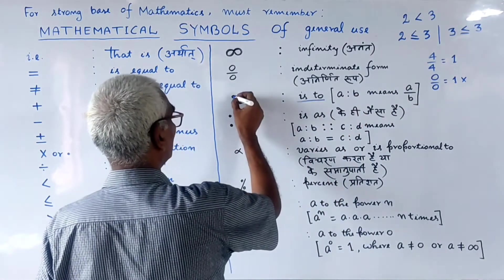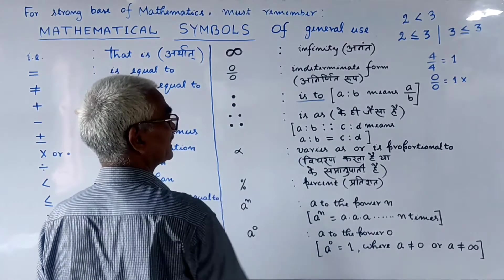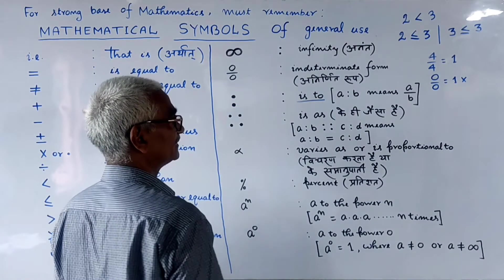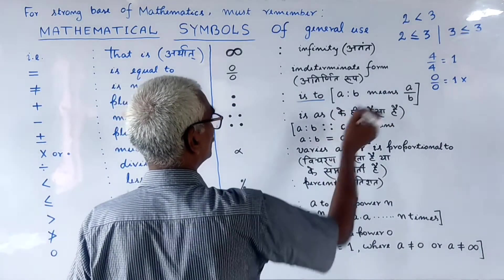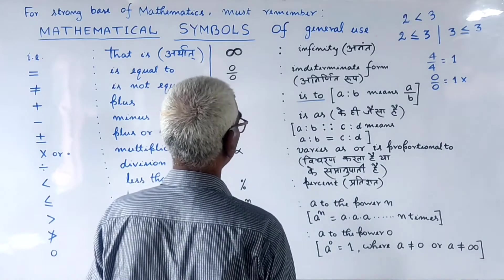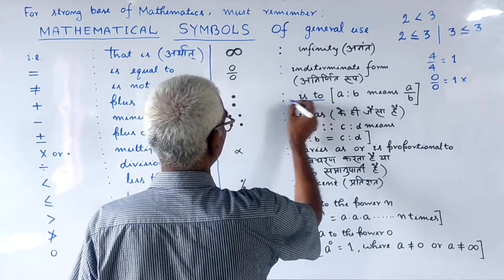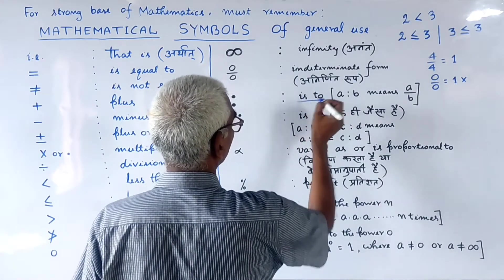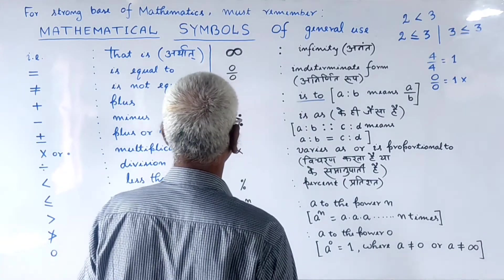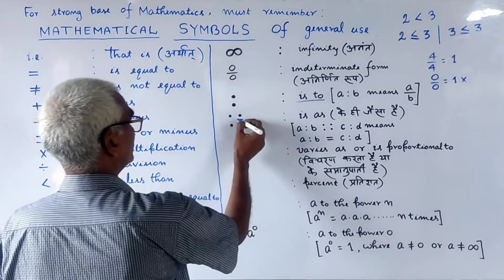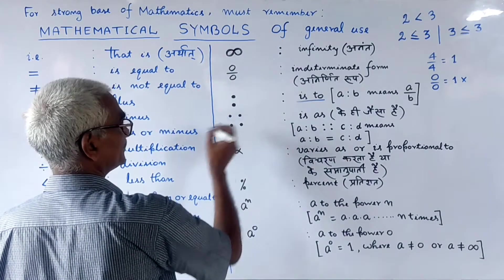This is the ratio symbol. It shows two points on the axis, and this indicates the ratio between two quantities.